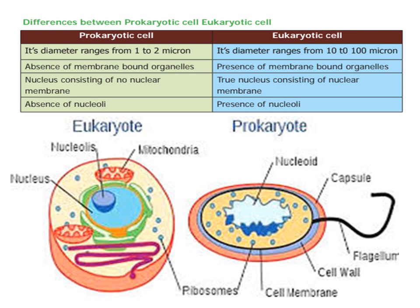Eukaryotic cells have different organelles — there are many organelles. The nucleus consists of a nuclear membrane.